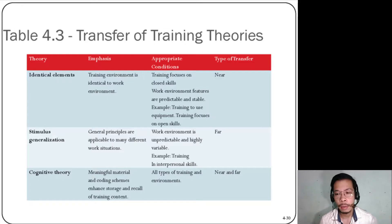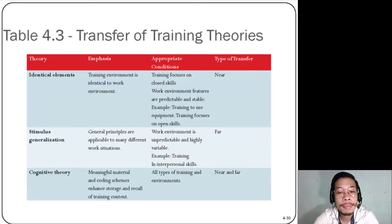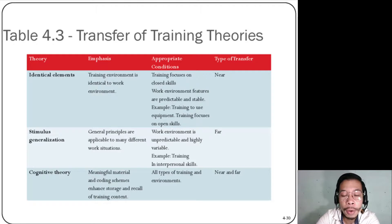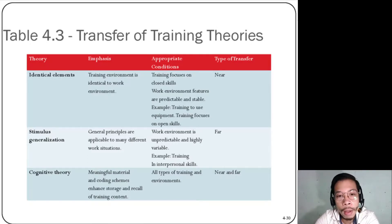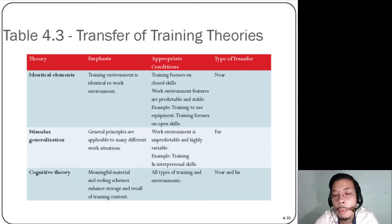With stimulus generalization, what has been learned in the OJT can also be applied to different tasks and different departments. The type of transfer here is far transfer — quite different from identical elements. The third theory is cognitive theory — how we construct schemas in our minds. Schemas are frameworks, and this theory focuses on enhancing storage and memory for recalling information. The type of transfer here is both near and far.